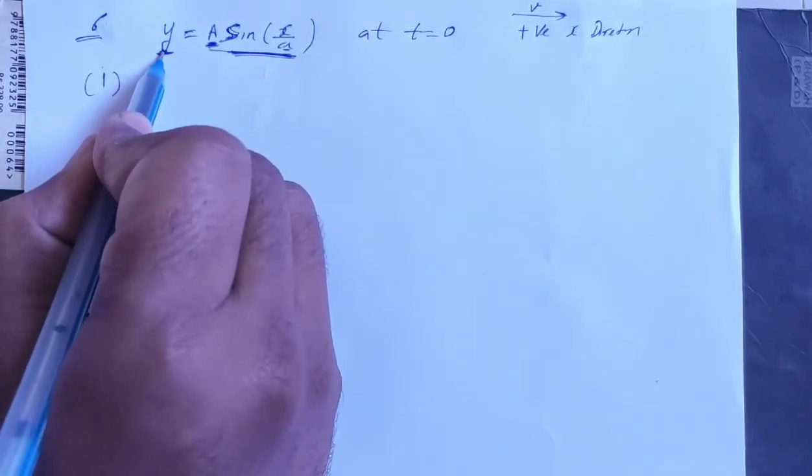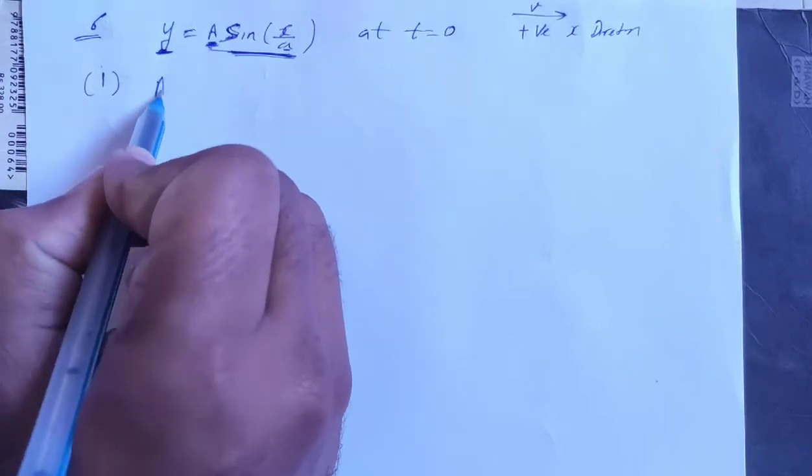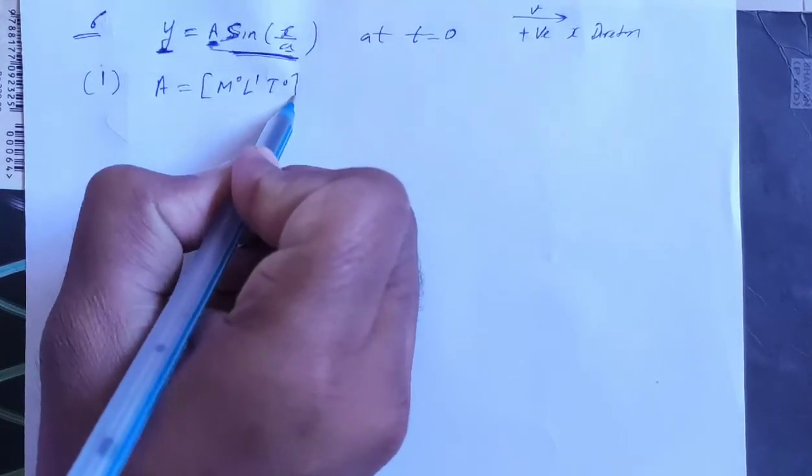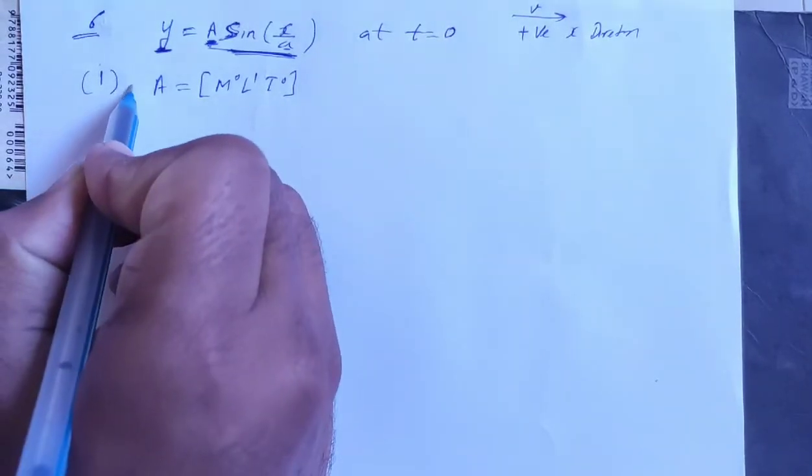y is meter length. So A has the dimension of m^0, l^1, t^0. This is the first part, the a part.